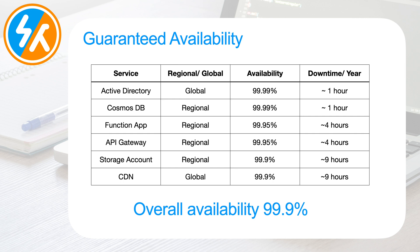This will lead to an overall availability of 99.9% with 9 hours of downtime per year. This doesn't seem much, however, imagine you have an e-commerce platform going down for 9 hours on Christmas — that will be disastrous. Let's make this better. Notice that some of the services are regional and the rest are global. We cannot improve SLA for global services; they will offer the best availability for their respective pricing tiers.